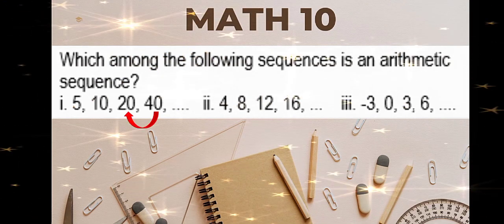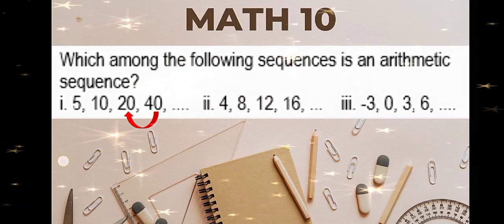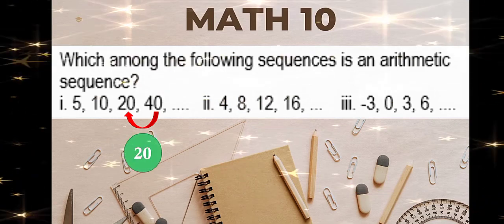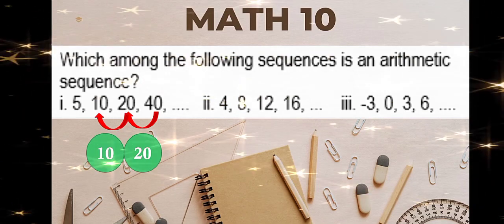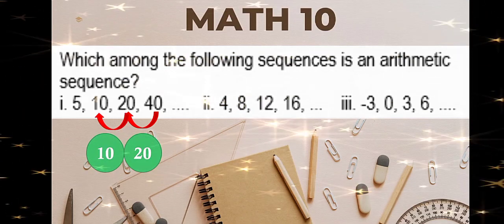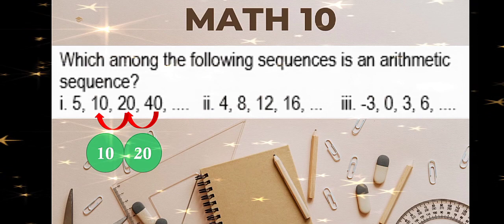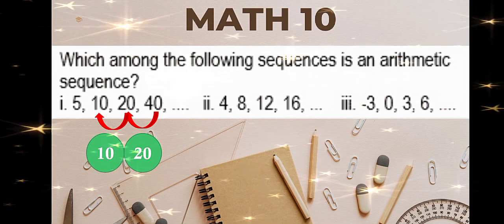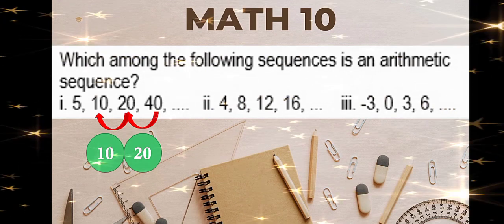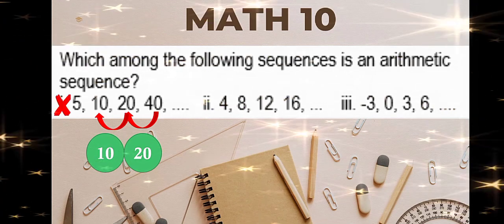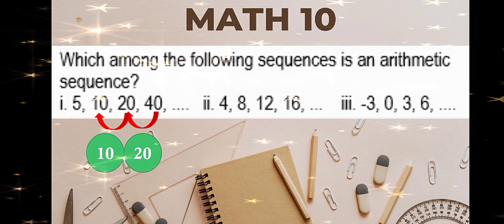14 minus 20 — 20 minus 10 is 10. So from here, there is no common difference. 20 and 10 are differences and they are not common. Therefore, A is not an arithmetic sequence. How about number 2?